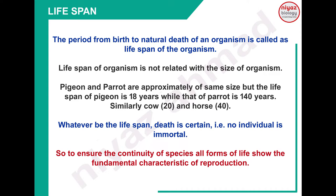Next line: whatever be the life span, death is certain. کوئی امر نہیں ہے - no individual is immortal. اسی فیکٹ کے اوپر main line یہ ہے: so to ensure the continuity of species, چونکہ مرنا سب کو ہے تو species ختم نہ ہو جائے - all forms of life show the fundamental characteristic of reproduction. To maintain the continuity of species and to maintain the generation, reproduction is the primary important characteristic.